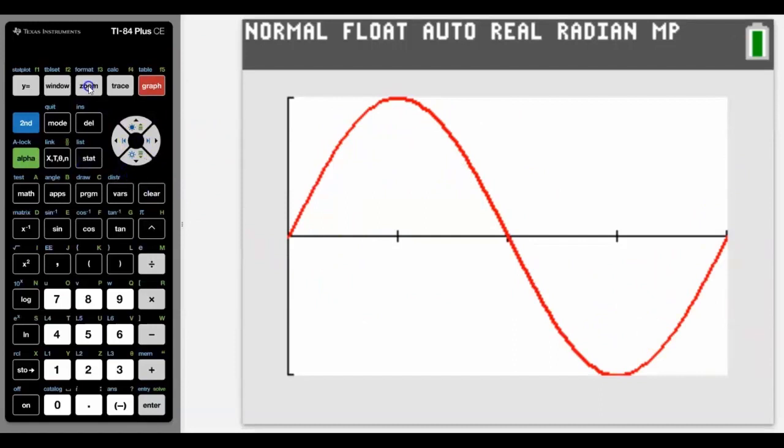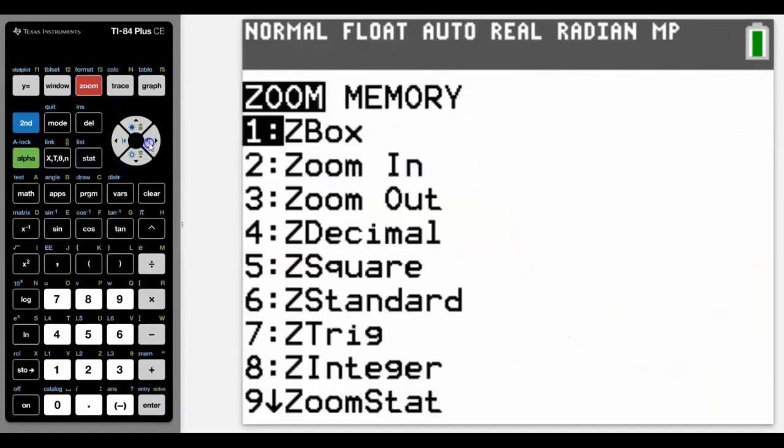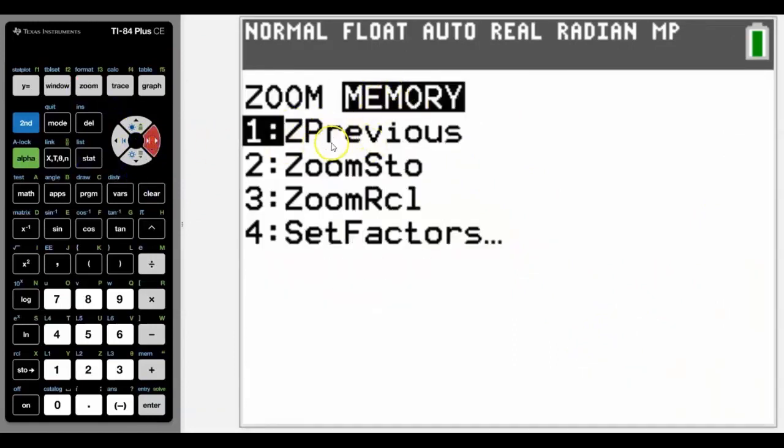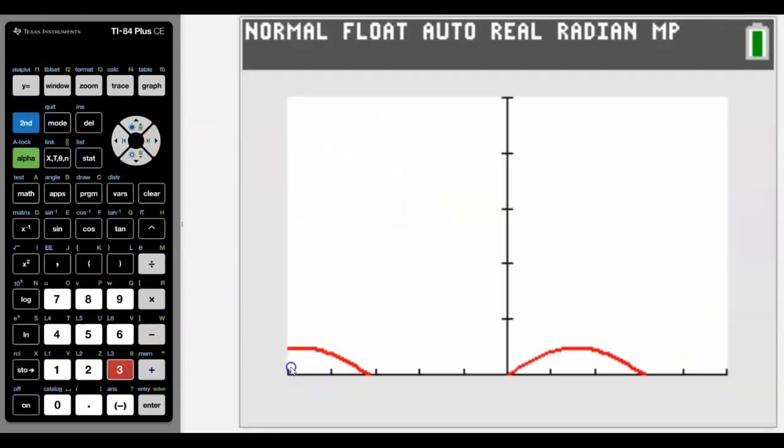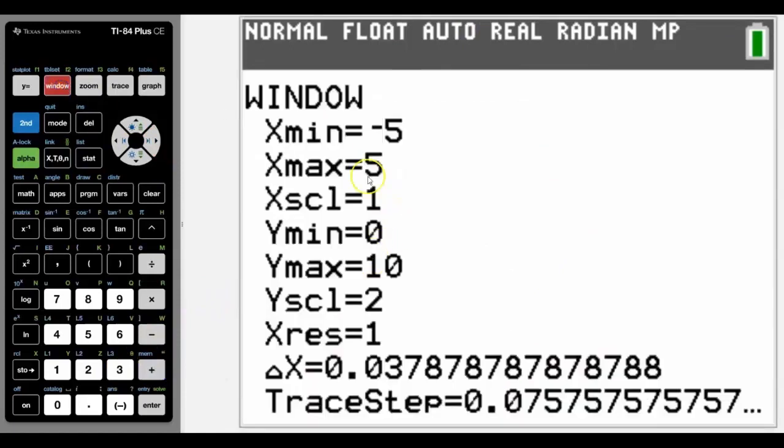Notice that if I now go back into zoom, go across to memory, and go to either previous if it's obviously the previous one or recall, it will then bring it back to that window that we had earlier that I've stored. That's really useful if you want to keep going back to certain windows. You can have that one stored as a particular one on your calculator. So hopefully you found that useful, and thank you very much for watching.